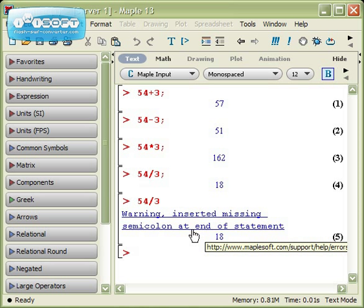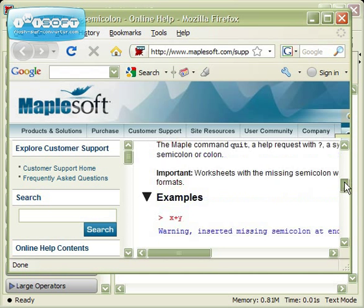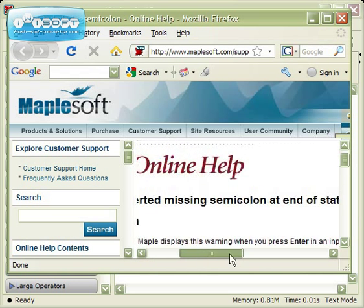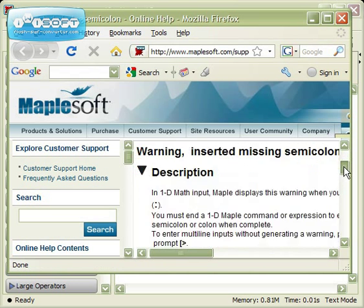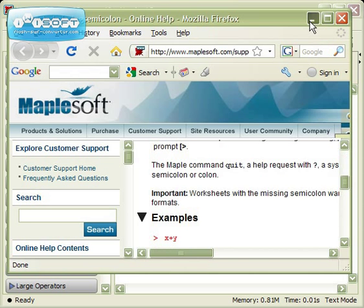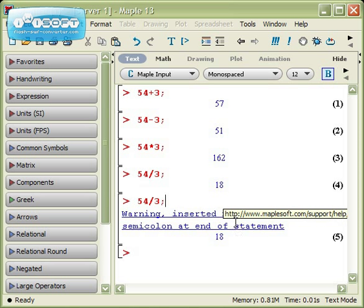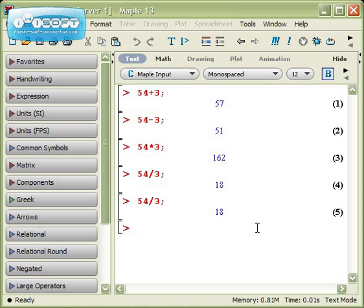Whenever you get a warning, don't worry about it. If you click on the warning, Maple will send you to a help page on the web that will teach you all about what's going on. For example, this is all about the missing semicolon at the end of the statement, and it tells you things that you can do to fix it. If this happens to you, no problem. Just go back to the line that caused the error, put the semicolon back in, and hit enter again, and it will work just fine.